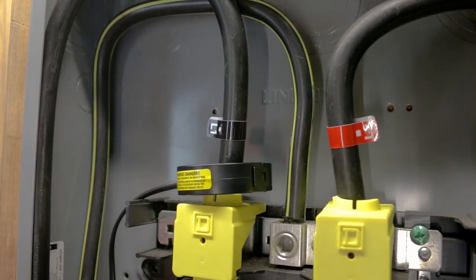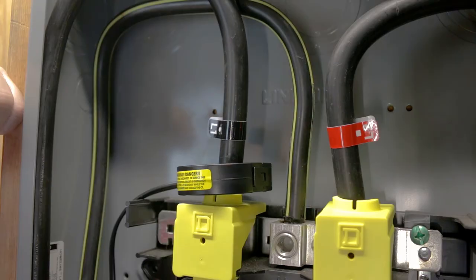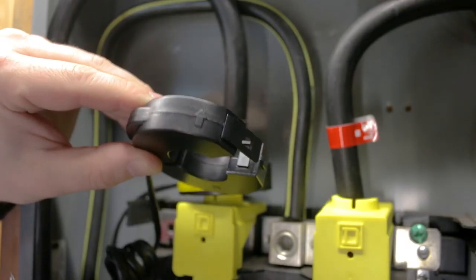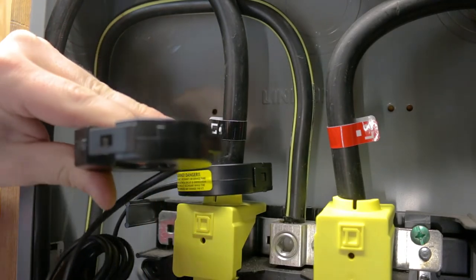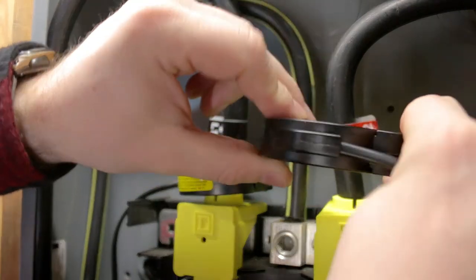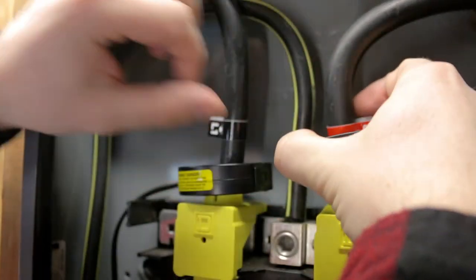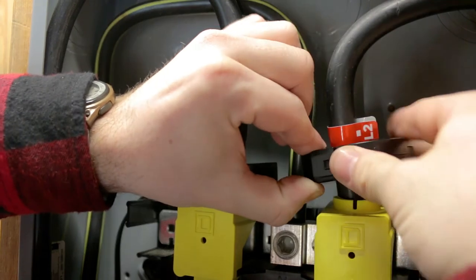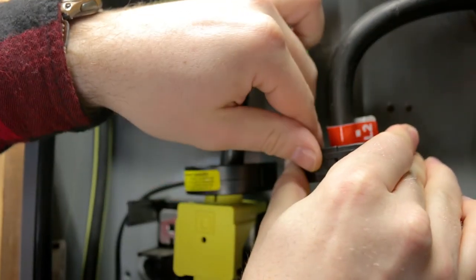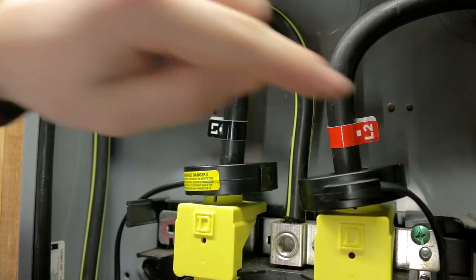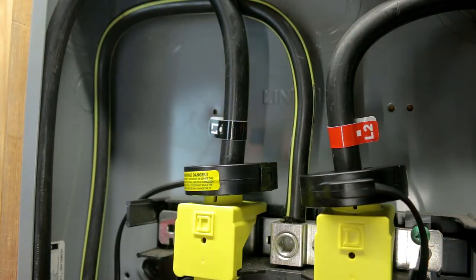We'll take our other CT for line 2 and make sure that arrow is pointing down, and we'll just go ahead and place it over here on our line 2 side. Then we'll run our wire over here to the side and run it down the opposite side of the box.